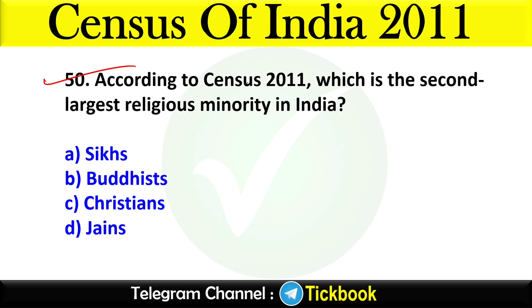Question fifty, the last question: According to Census 2011, which is the second largest religious minority in India? Option number C is the right answer: Christian.